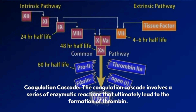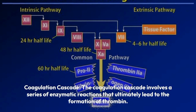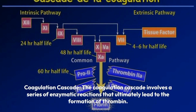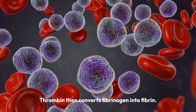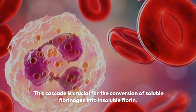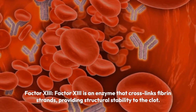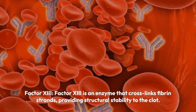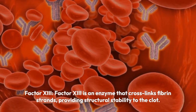The coagulation cascade involves a series of enzymatic reactions that ultimately lead to the formation of thrombin, which then converts fibrinogen into fibrin. This cascade is crucial for the conversion of soluble fibrinogen into insoluble fibrin. Factor XIII is an enzyme that crosslinks fibrin strands, providing structural stability to the clot.